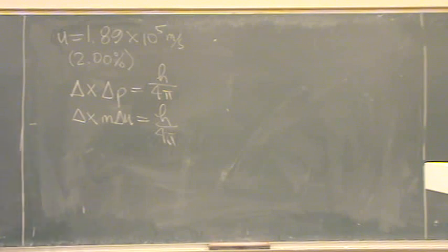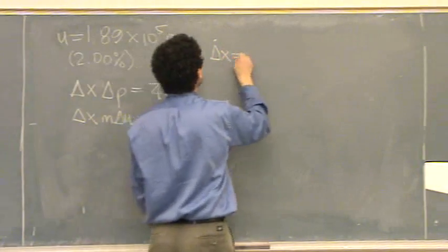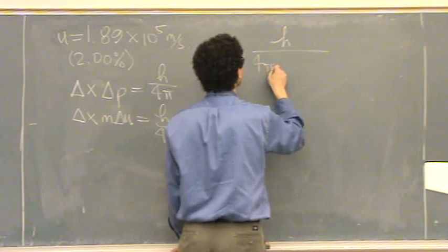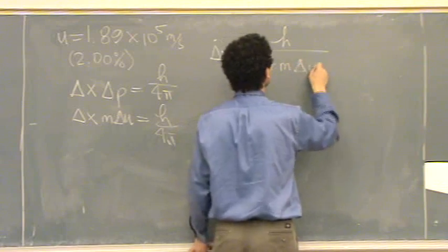Is that right? Yeah. Okay. So, we'll solve for position. Change in X is H over 4 pi, mass times change in U.